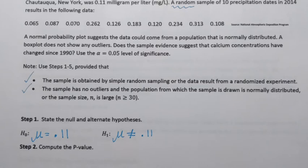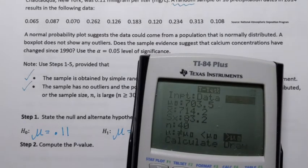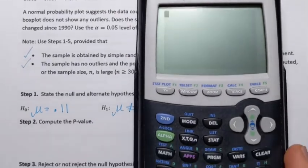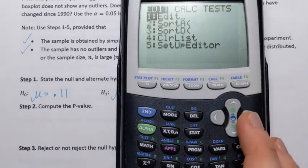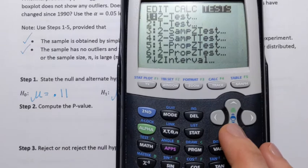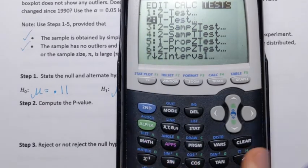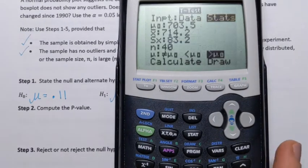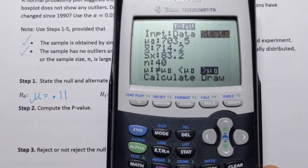To compute p-value, we're going to use the calculator. On the calculator we have to press STAT, then move to TESTS, and then select test number two. For population mean hypothesis test, we use that second test.